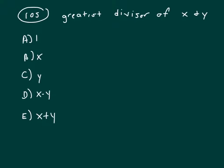Okay, we're trying to figure out the greatest divisor of x and y. For example, if x is 6 and y is 2, the greatest common divisor between 6 and 2 would be 2. That means that's the largest number that goes into both of them.